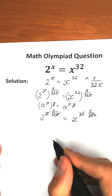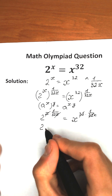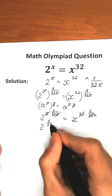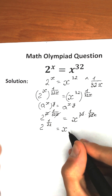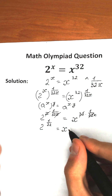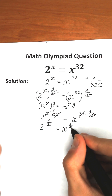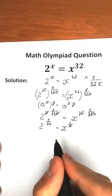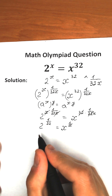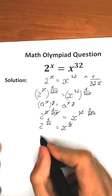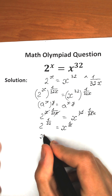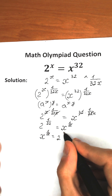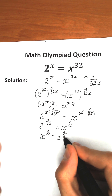As a result we have 2 to the power 1 over 32, equal to x to the power 1 over x. Let's change the order so we prefer x on the left hand side: x to the power 1 over x equals 2 to the power 1 over 32.